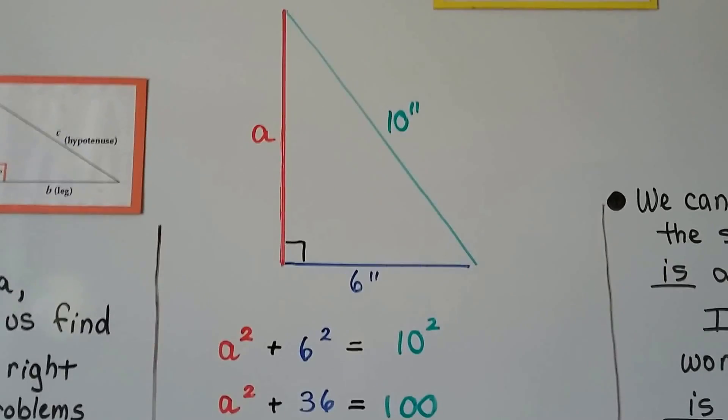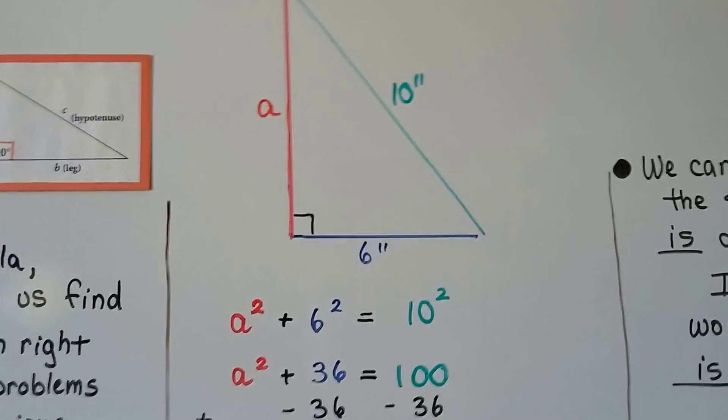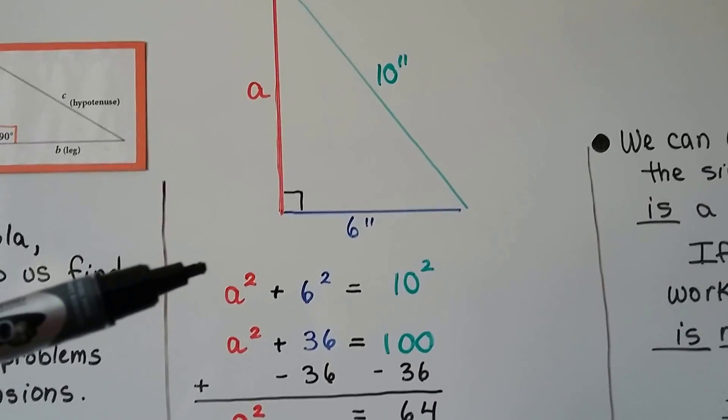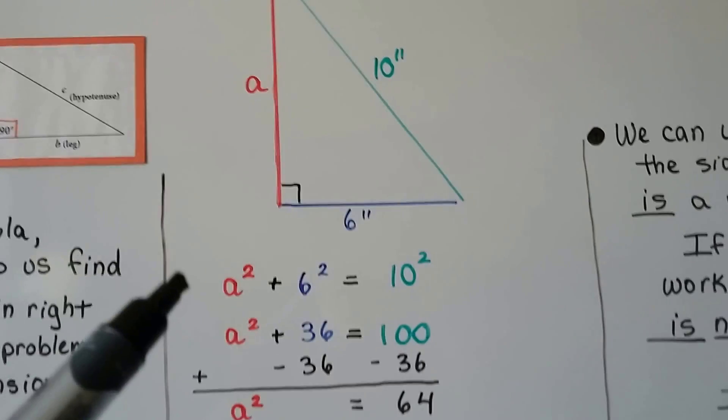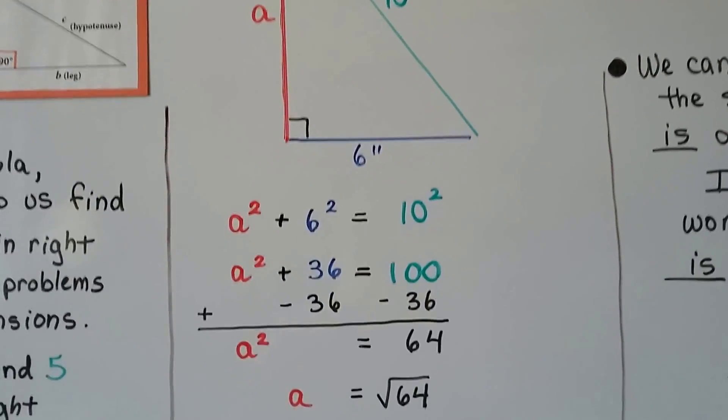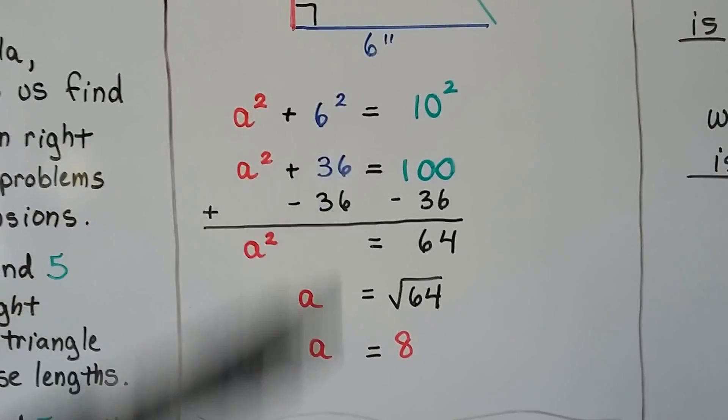And take a look at this one. We've got the side length for B, and we've got the hypotenuse C, but we don't have A. So, we know a squared plus b squared equals c squared. So, we've got a squared plus 6 squared equals 10 squared. 6 times 6 is 36. 10 times 10 is 100.